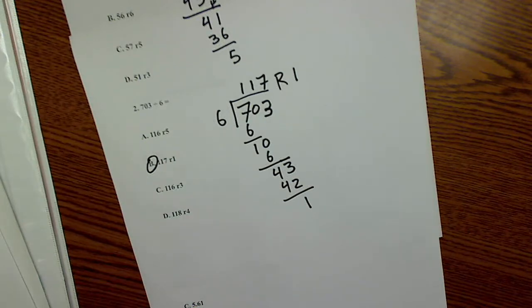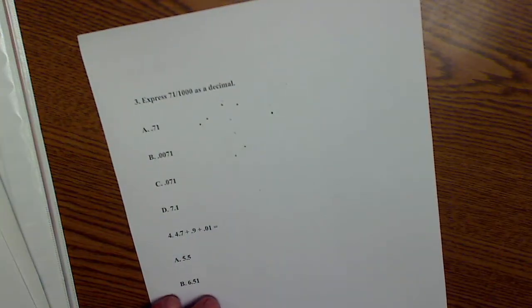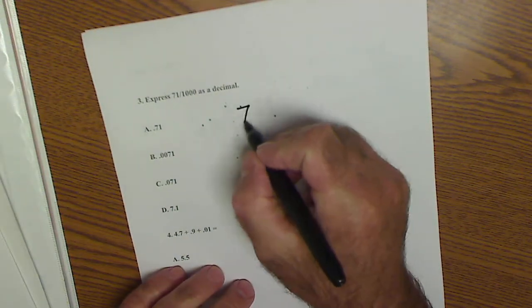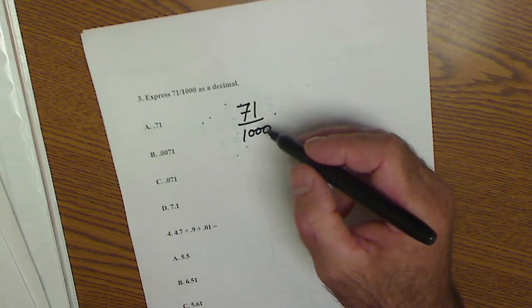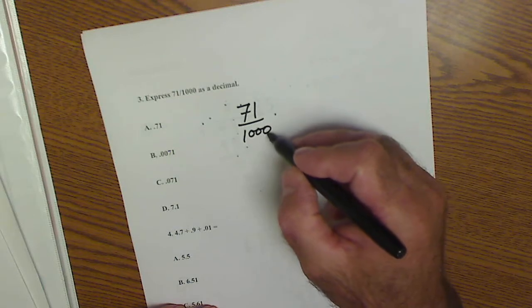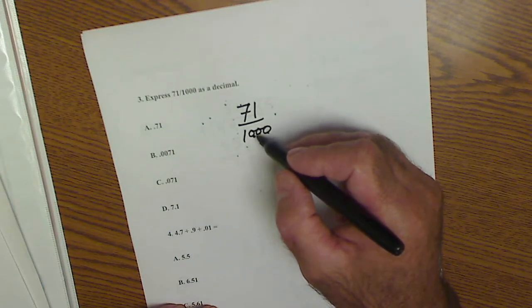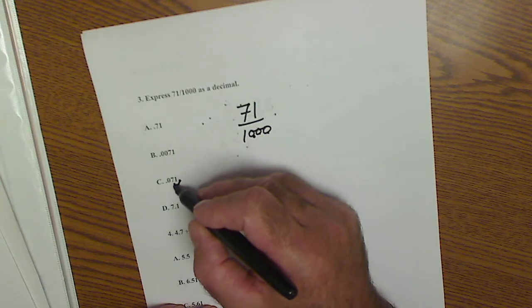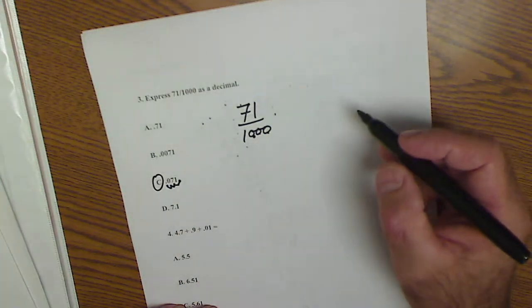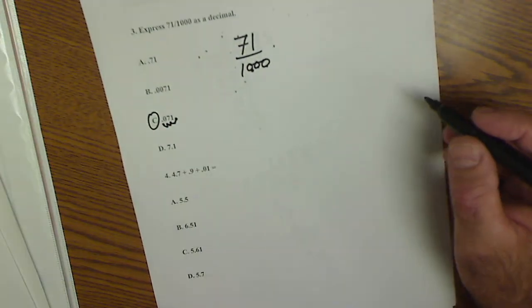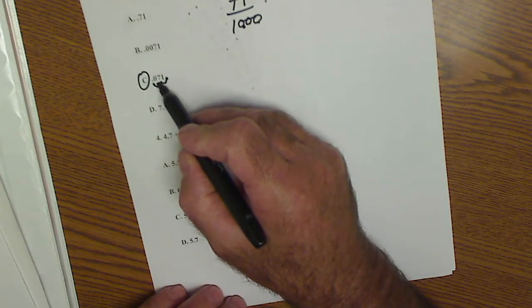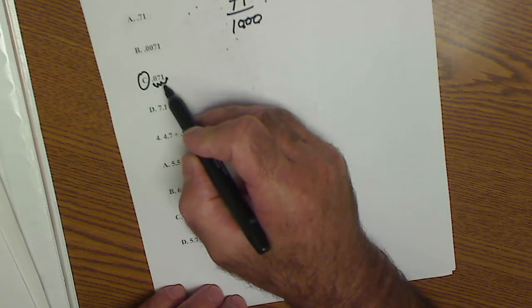Turn the page. Express 71 1/1000 as a decimal. That means I'm going to move it over three places. There are three zeros on here, so it'll be three places over: 1, 2, 3. So it's answer C, or that's probably the best way to do it. This is the tenths place, the hundredths place, and the thousandths place, because this is 71 1/1000.